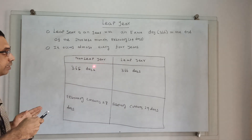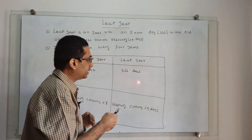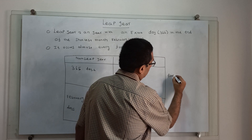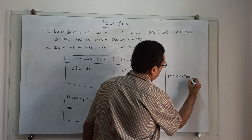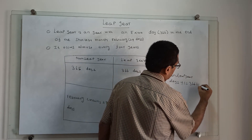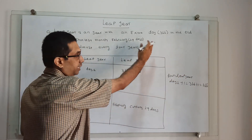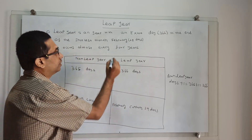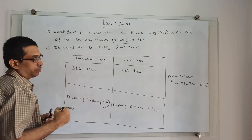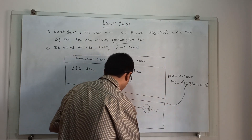I have tabulated the difference between a non-leap year and a leap year. A non-leap year contains 365 days; a leap year contains 366 days — that means non-leap year days plus 1, which equals 365 plus 1, equaling 366 days. The second difference: the one extra day is added in the shortest month, February. For a non-leap year, February contains 28 days only; for a leap year, February contains 29 days. This one extra day is added in the month of February.